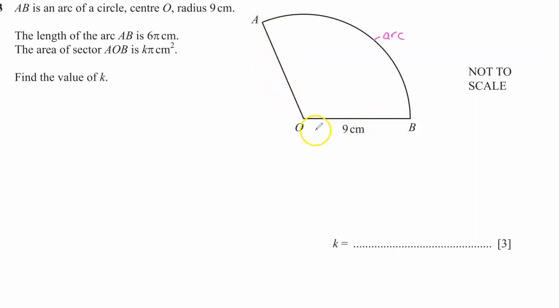Now how do we know that OA is a radius as well as OB? We know that because we've been told that O is the center of the circle, and if O is the center and this curved portion is an arc, it tells us that the line OA is a radius because a radius is a straight line that runs from the center to the circumference.